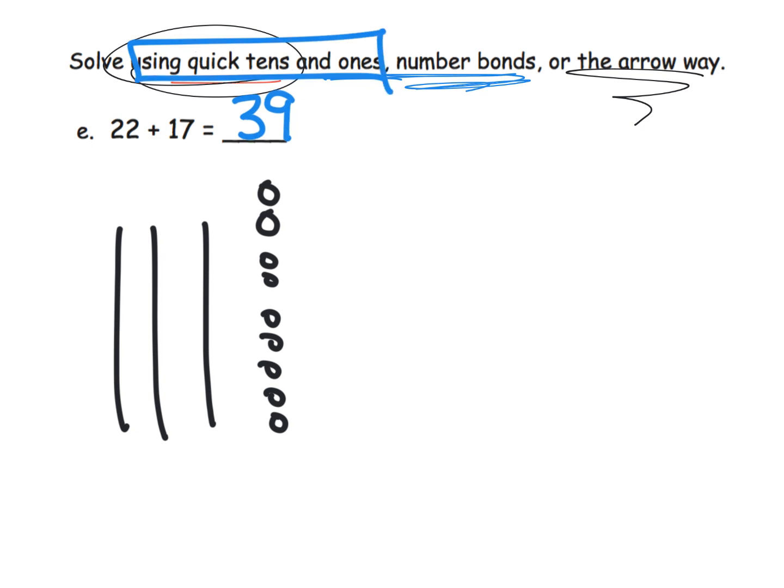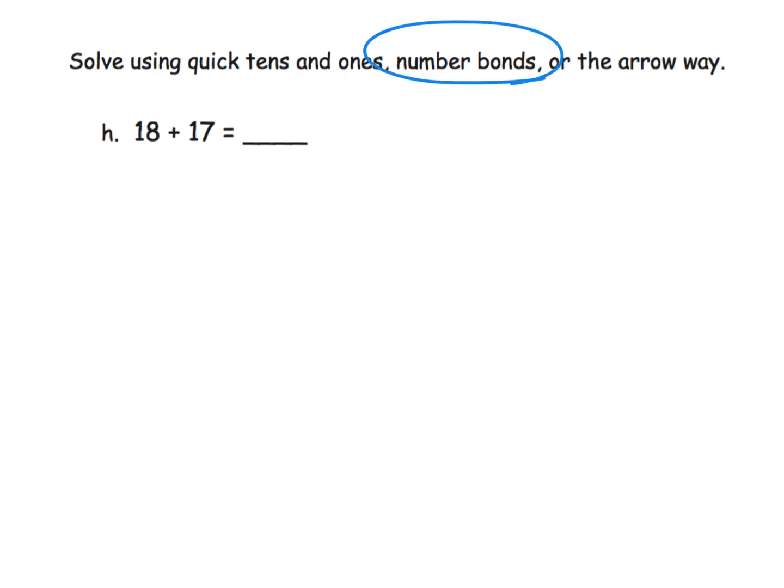How about this method? We will use the number bonds method. So I'm going to start with 18 plus 17, and we have a couple of choices. I think what I'll do is I will do the make the next 10 method. The idea is I'm going to look at the 18 and I know I need two more to make the next 10. So I'm going to decompose 17 to be 2 and 15.